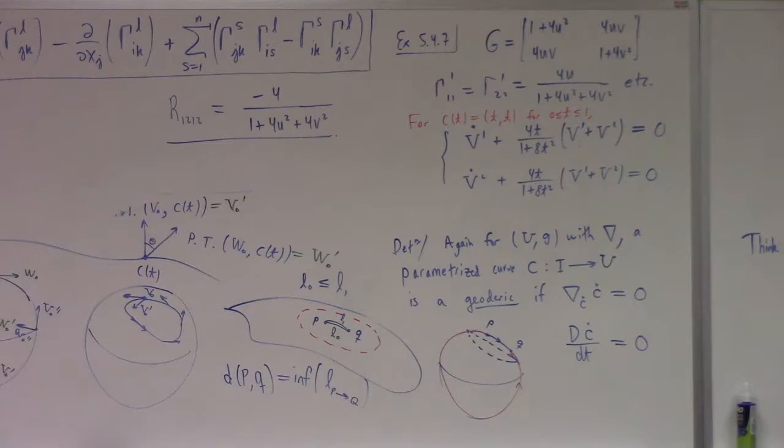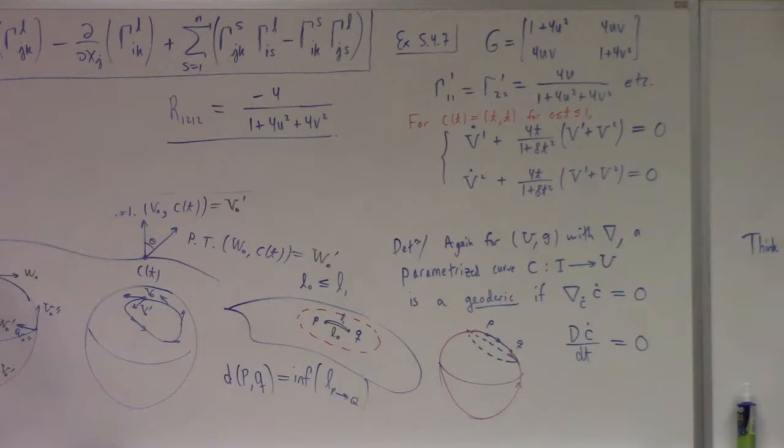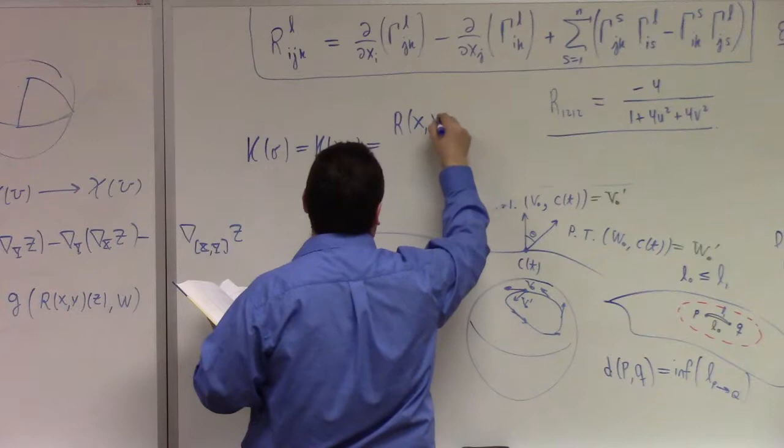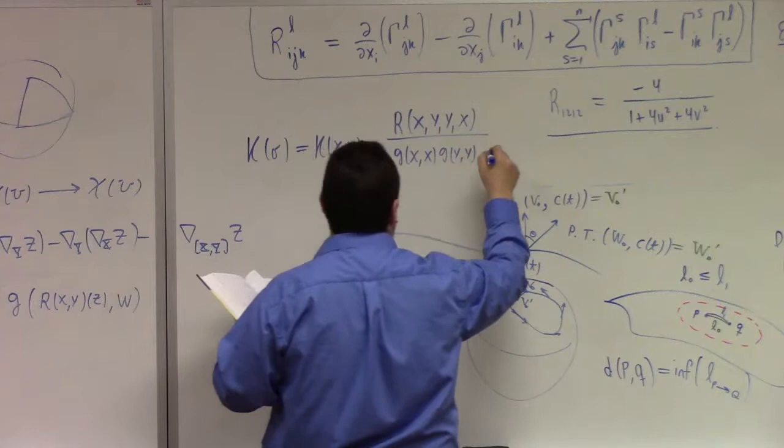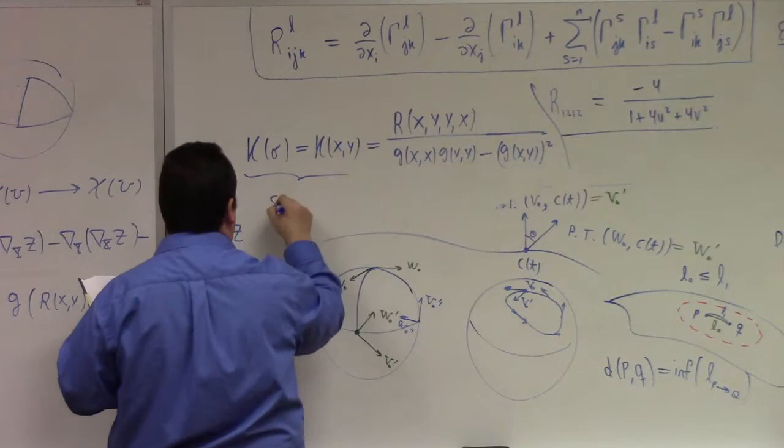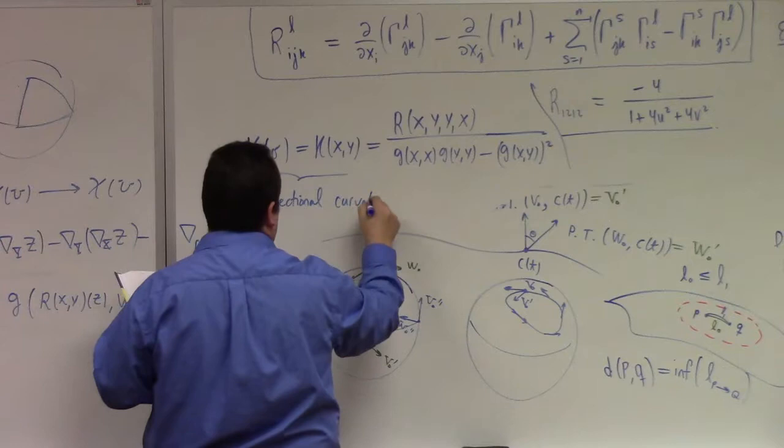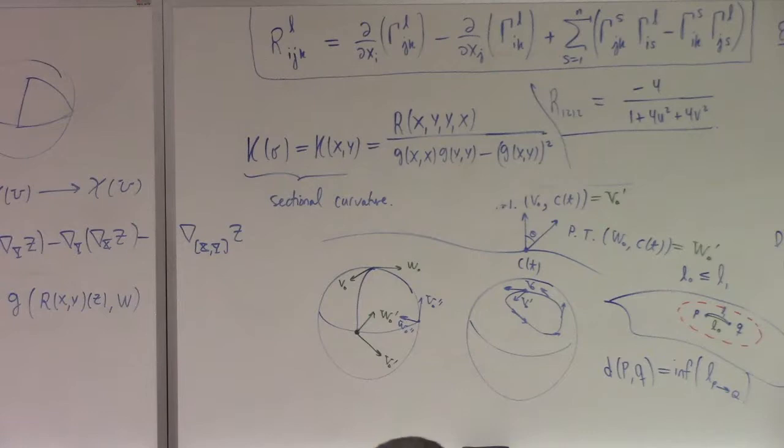Now, from this little monster of multilinear algebra, this type zero four tensor, you can build sectional curvature. And sectional curvature, K sigma, which is Kxy, that will be R of x, y, y, x, divided by G of x, x, G, y, y, minus Gxy squared. What this is, guys, so-called sectional curvature, is it's basically the curvature of your space looking at just the plane. The x and y are a basis for sigma. Sigma is actually a plane. You can think about a plane field.